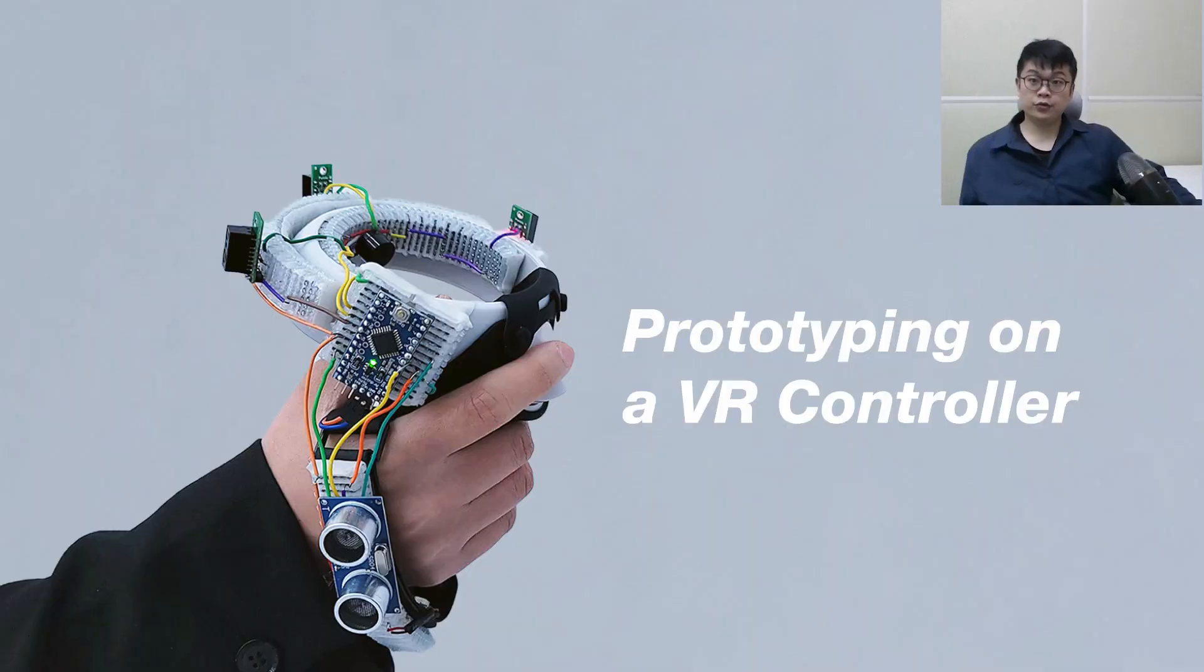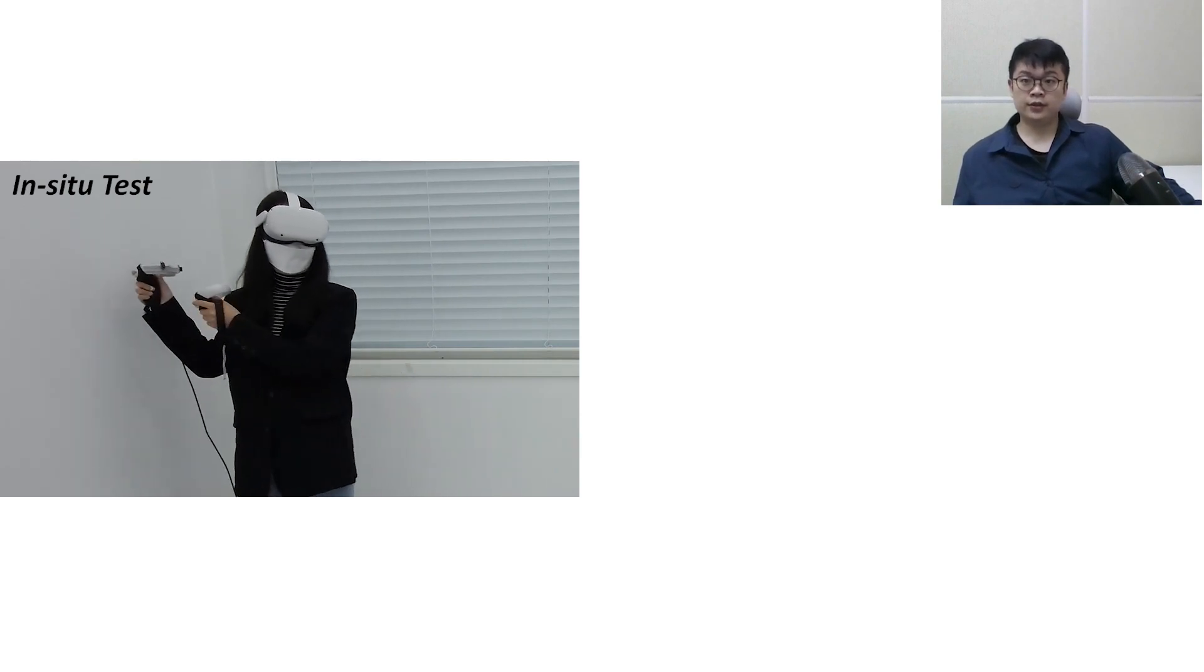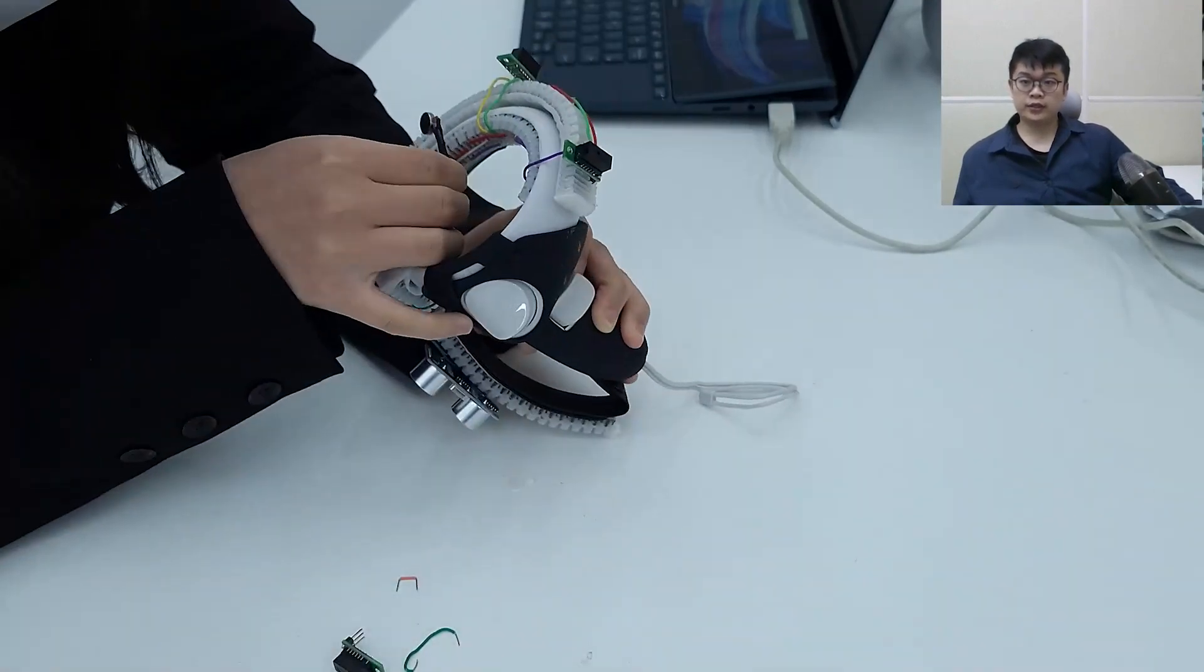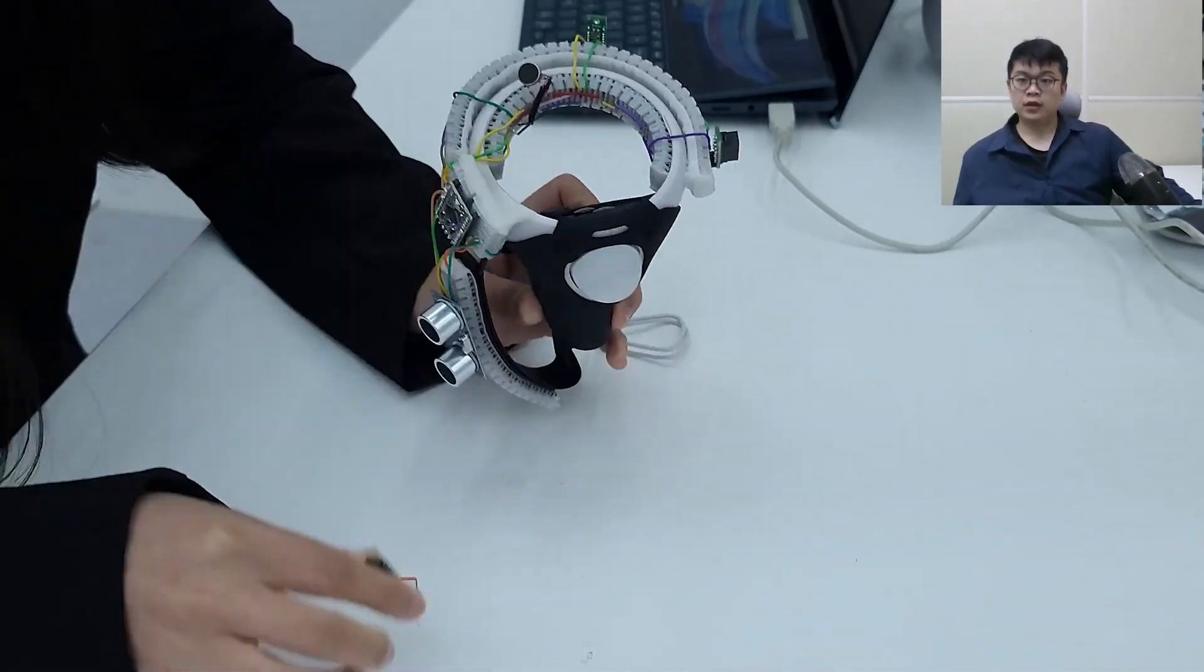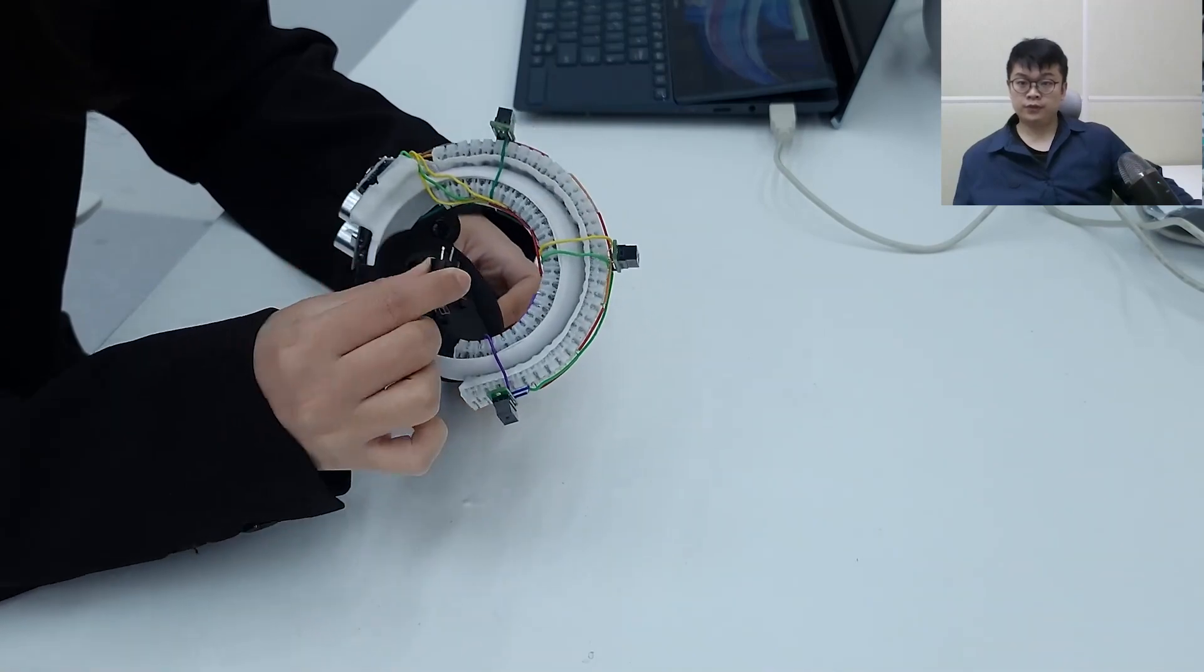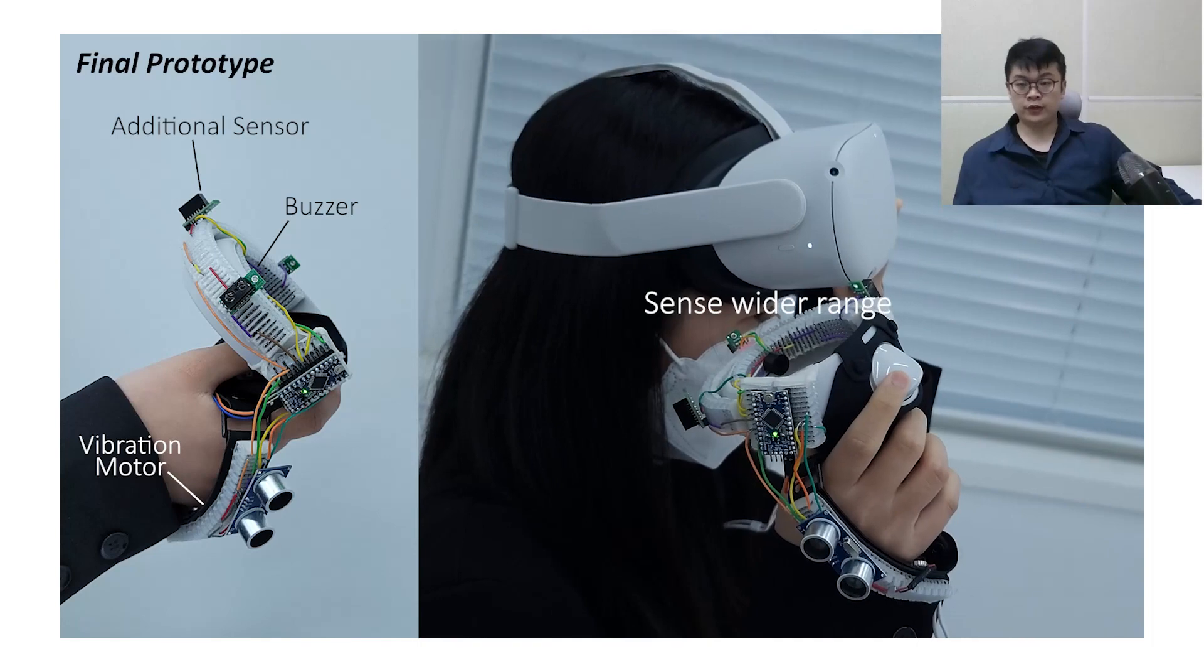I will now demonstrate how FlexBoards can be used in prototyping with 3 scenarios. The first one is prototyping on a VR controller. We first created an initial prototype, which includes various sensors to alert users of potential collision while in use. We conducted an in-situ test with the initial prototype, and we discovered a blind spot. We directly iterated by changing sensors. Also, we moved vibration motors to the little finger, and we added a buzzer for better notification. It allows us to make a well-functioning final prototype.